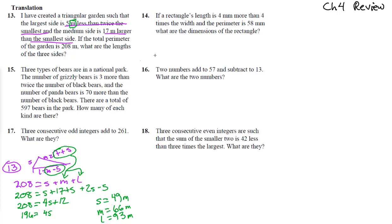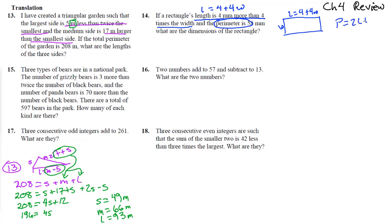Number 14: if a rectangle's length is four millimeters more than four times the width, the length is 4 plus 4w. The perimeter is 58. The formula for perimeter is 2l plus 2w, so we know 58 equals 2l plus 2w. Since l is already solved for, substitute it in: 2 times (4 plus 4w) plus 2w.